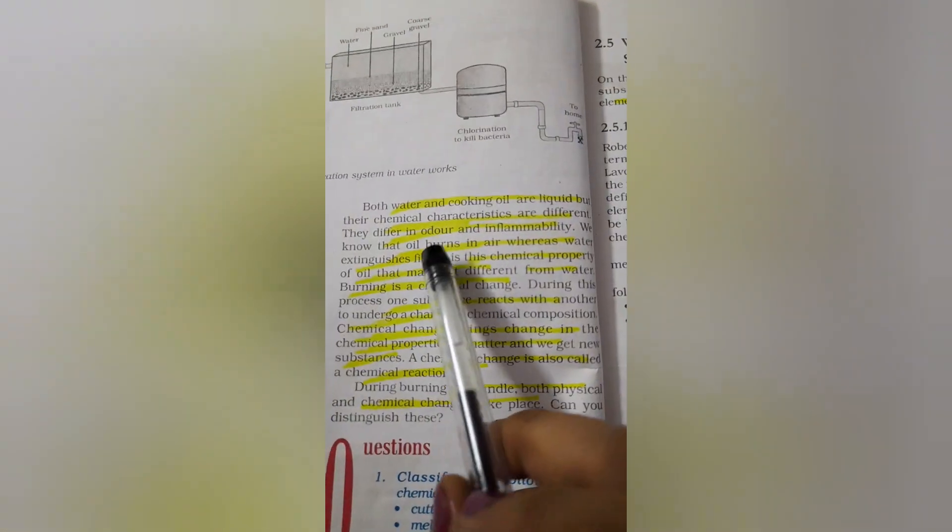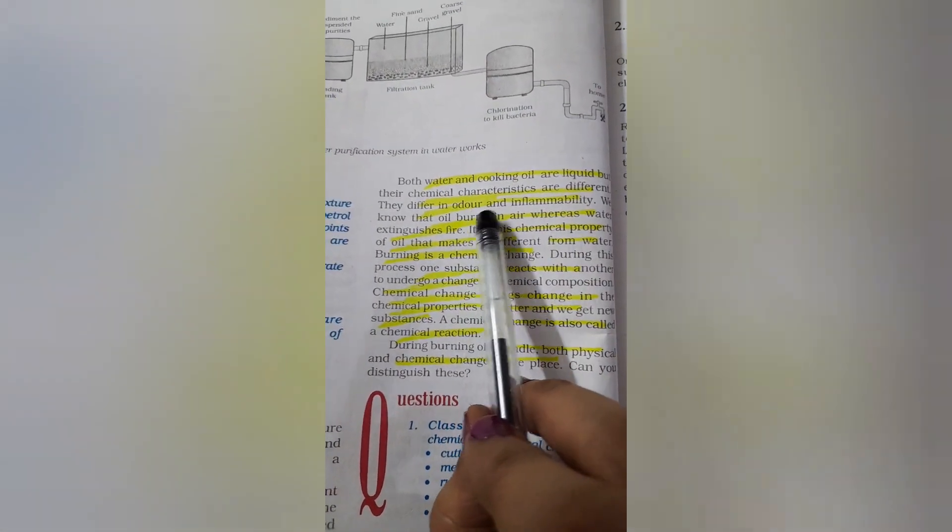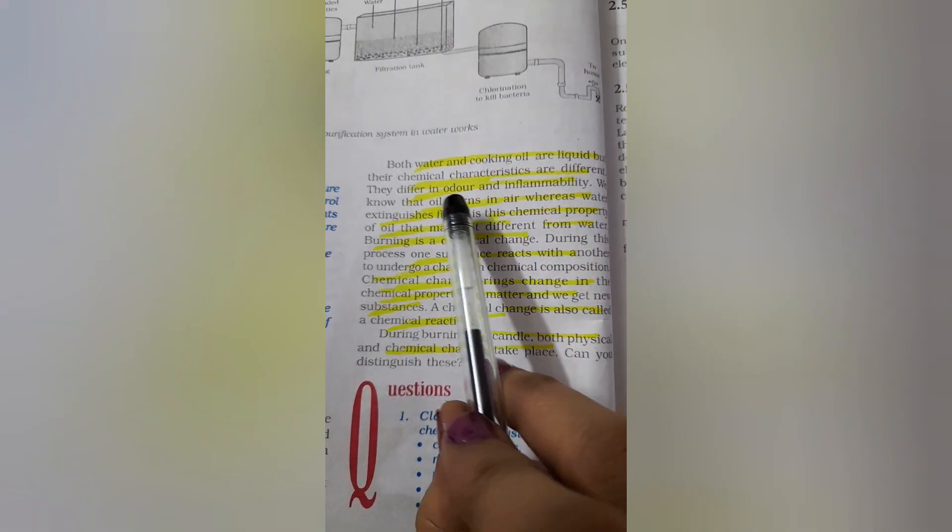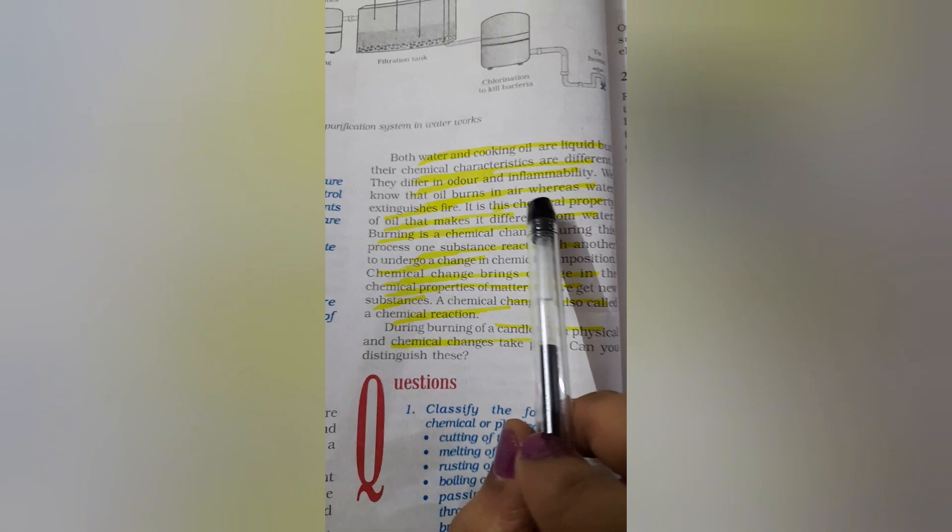Now take the case of water and cooking oil. These two, water and cooking oil, both are liquids but their chemical properties will differ, their odor, their smell is different, their inflammability will be different.